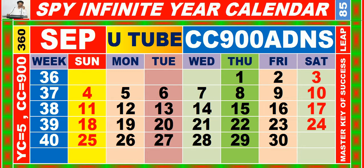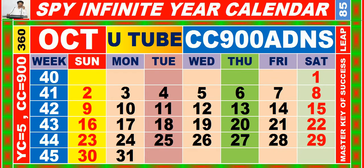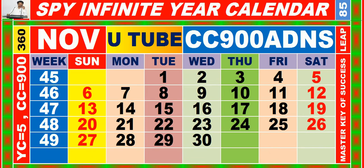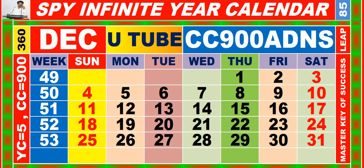Calendar for the month of September having calendar code equal to 9-0-0. Calendar for the month of October having calendar code equal to 9-0-0. Calendar for the month of November having calendar code equal to 9-0-0. Calendar for the month of December having calendar code equal to 9-0-0.